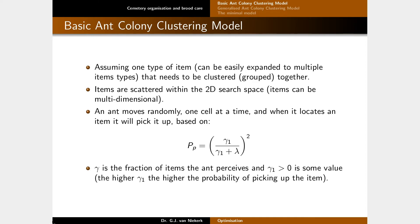Let's start with the basic ant colony clustering model. We assume one item type for now — it can easily be expanded to multiple item types. We scatter items in a 2D search space, but keep in mind the items themselves could be multidimensional: different fonts of different letters, client information, anything we'd like to cluster.